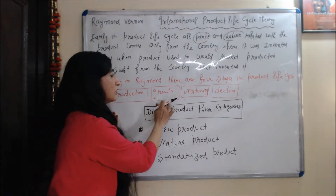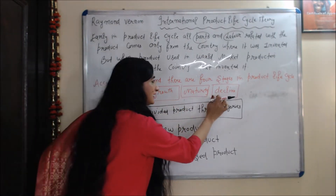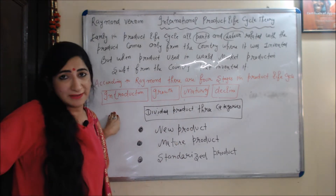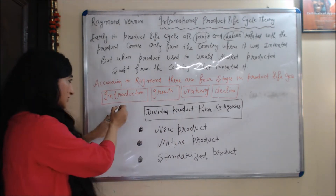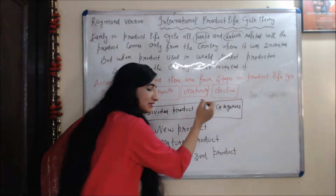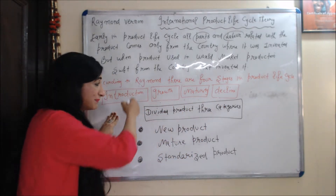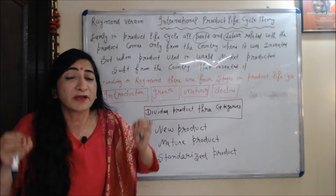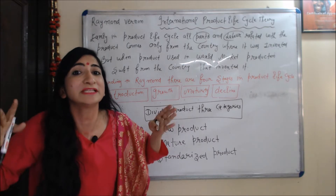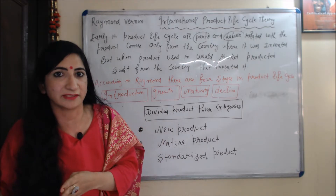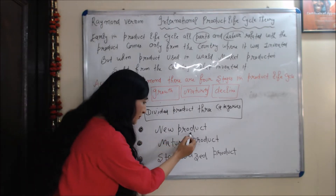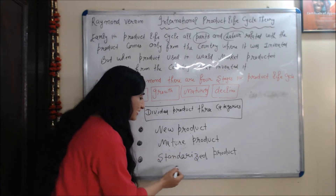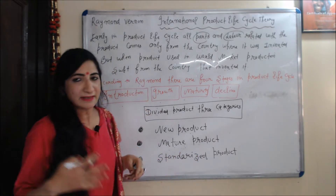The four stages are introduction, growth, maturity, and decline. Based on these four stages, Raymond Vernon divided products into three categories: the first category is new product, the second category is mature product, and the third category is standardized product.